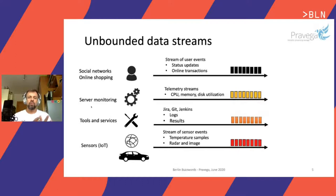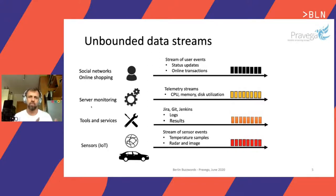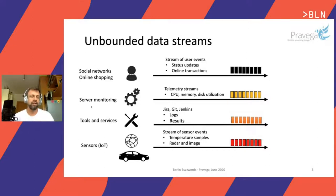When I think about data streams, I'm referring to data coming from sources that are continuously generating it. It could be end users in traditional applications like social networks, or users doing online shopping with online transactions — all generating a continuous flow of events. But it's not only about end users. You can have machine-generated data: servers continuously emitting telemetry, and tools like Jira, Git, Jenkins outputting messages continuously that we want to ingest, process, and visualize.